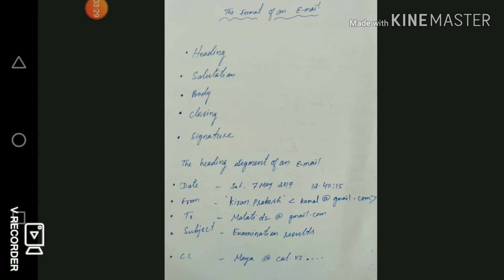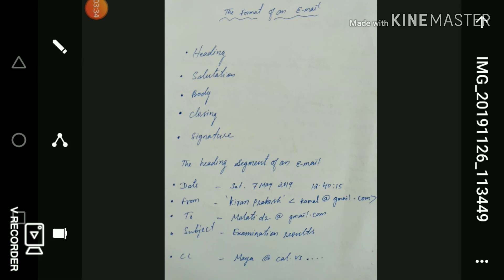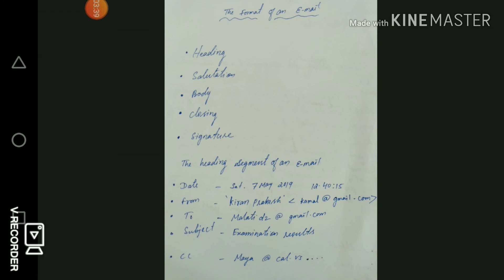After 'From' we have 'To.' The 'To' line includes the recipient's email address, as I have also shown in the example. Next to that we have the subject — the subject line summarizes the topic of the email in a few words.